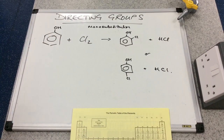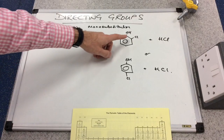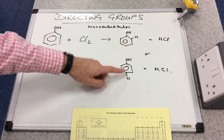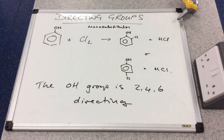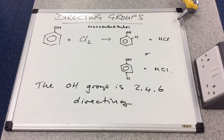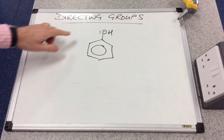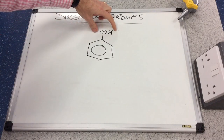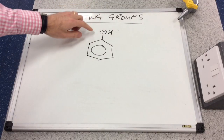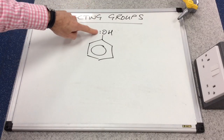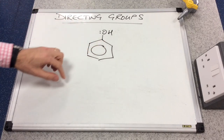So OH groups direct substitutions to occur at positions 2, 4, and 6. Let's take a look at why.